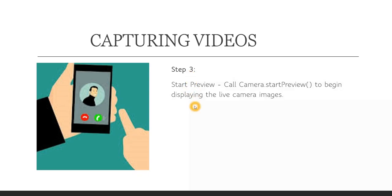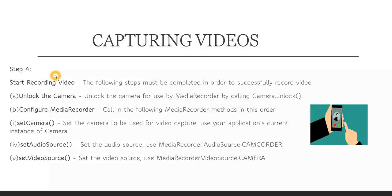In step one we are opening the camera using the Camera.open() function. In step two we are setting the preview. In step three we will start the preview. This is the time where we see the video icon at the bottom of our application, so that when we click on that video icon, video will start getting recorded. For that we have to use the startPreview() function to begin displaying the live camera image. The first three steps are almost similar to whatever we had seen in the case of capturing an image.